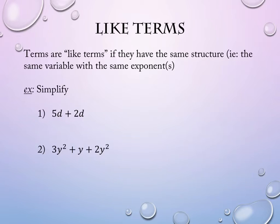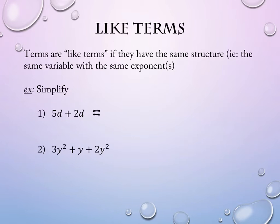On number one, the 5d and the 2d are like terms because they both have d. The exponent on d is 1 — they match. So when that happens, we can combine those terms together. What is 5d plus 2d? 7d.